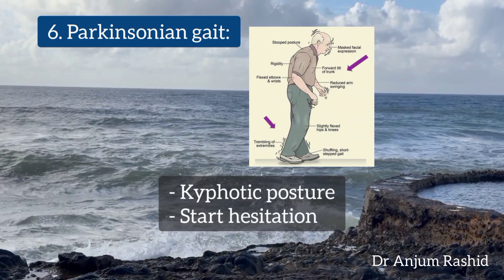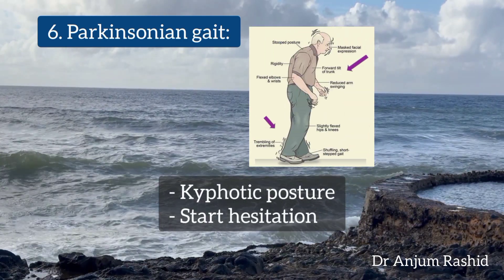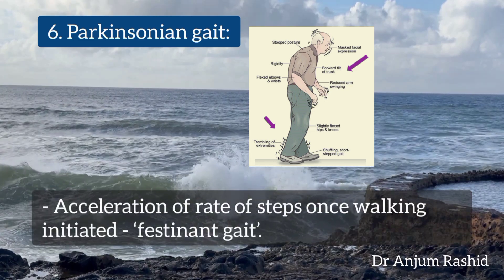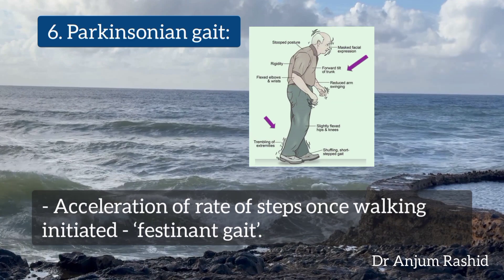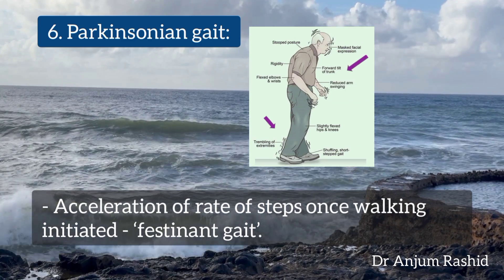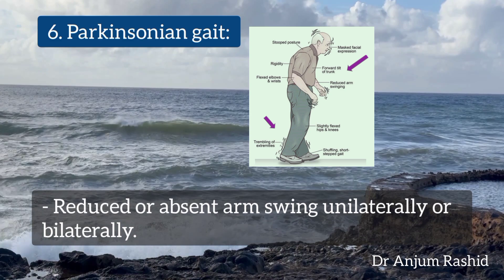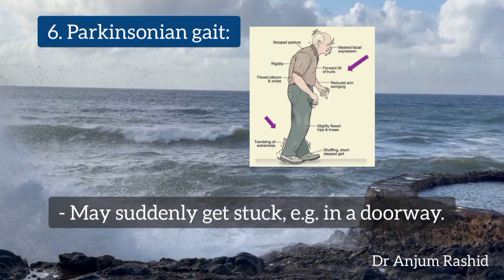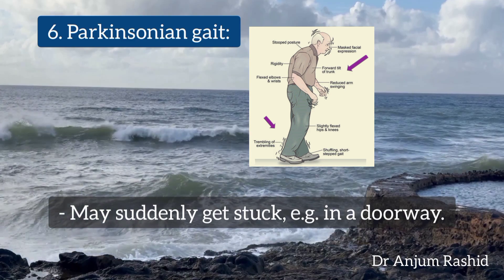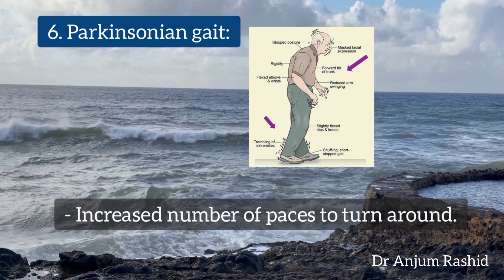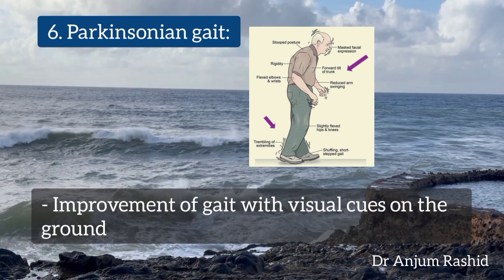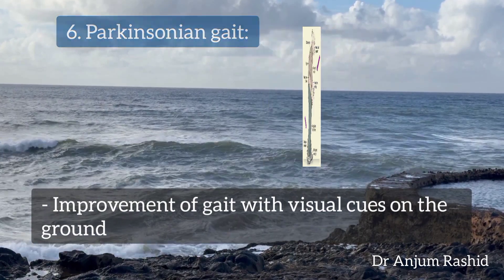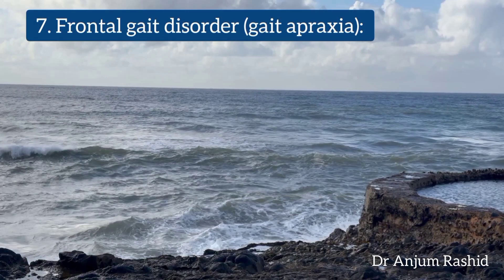The sixth type is Parkinsonian gait, seen in Parkinson's disease. Features include kyphotic posture, start hesitation, initially small paces which may get bigger, and acceleration of the rate of steps once walking is initiated — this is called festinating gait. There is reduced or absent arm swing, unilaterally or bilaterally. The patient may suddenly freeze, for example in a doorway, and requires an increased number of paces to turn around. However, gait improves with visual cues on the ground.